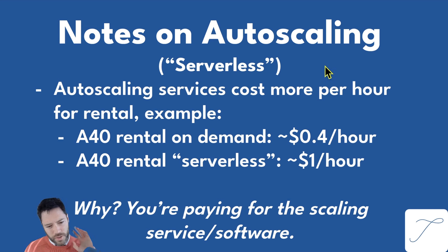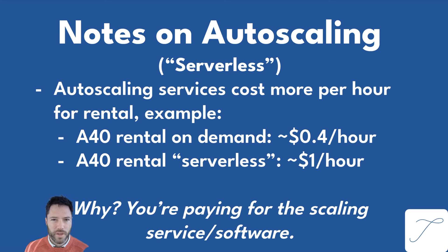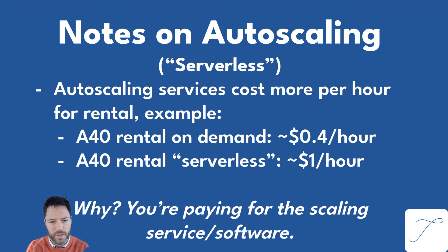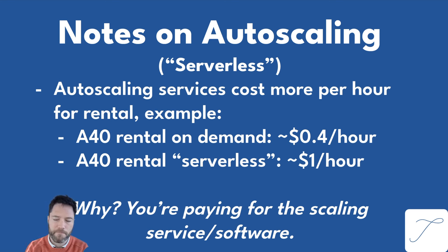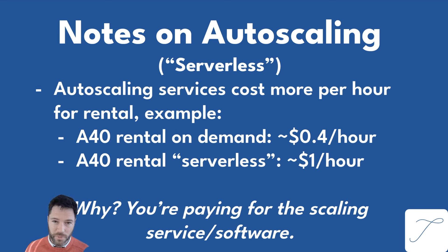There are two main ways to do auto-scaling. One is an off-the-shelf or serverless approach from companies like RunPod or Fireworks, which manage software to scale GPU count up and down with request volume. When you use these services, the hourly rental cost is typically more expensive — an A40 at 40 cents per hour might cost two to three times that on serverless. The alternative is to rent GPUs and turn them on and off via API yourself if you have the software to do that scaling, which is what we're going to look at in this video.